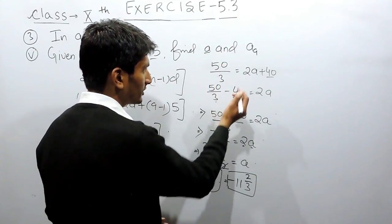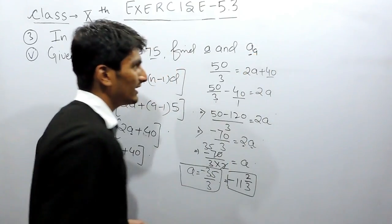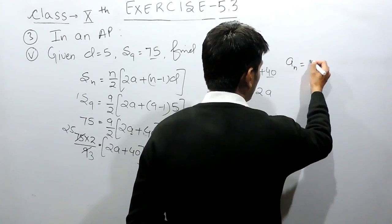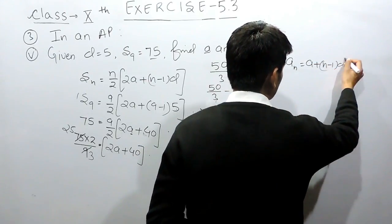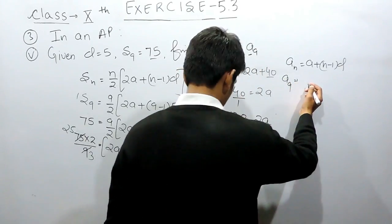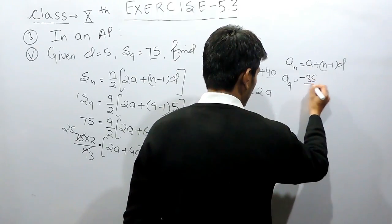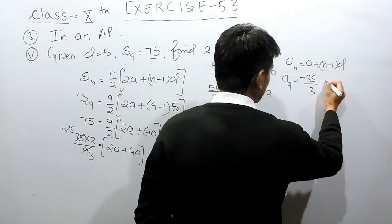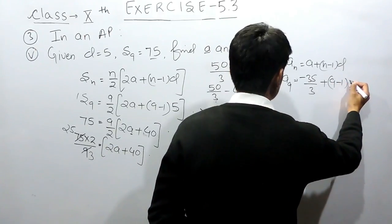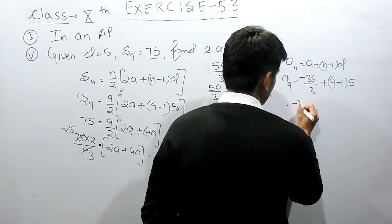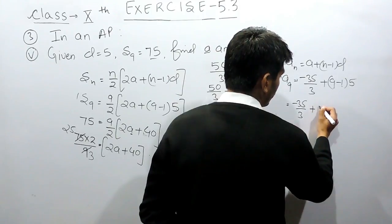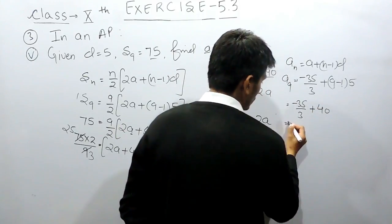Now we have to find the ninth term of this AP. To find the nth term of an AP, we use the formula: nth term equals a plus (n minus 1) times d. In this case, we need the ninth term, where the first term a is minus 35 upon 3, n is 9, and d is 5. Substituting: a9 equals minus 35 upon 3 plus 8 into 5, which is 40.